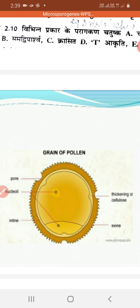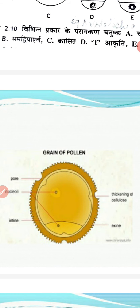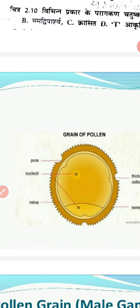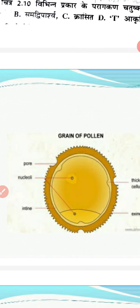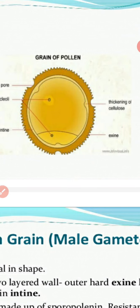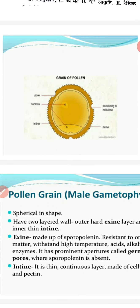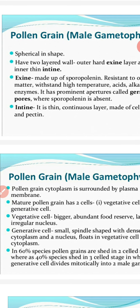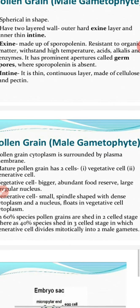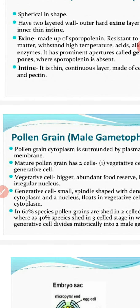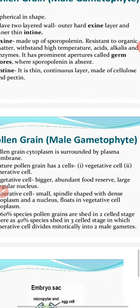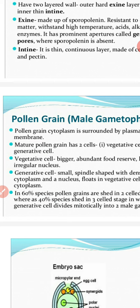The structure of the pollen grain has three pores, contains an enzyme, and has two nuclei forming two cells: one is the generative cell and the other is the tube cell. The vegetative cell is large with abundant food material and a large irregular nucleus. The generative cell is small, spindle-shaped, with dense cytoplasm, and floats inside the vegetative cell.